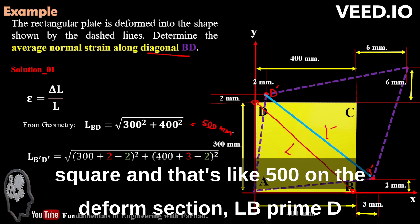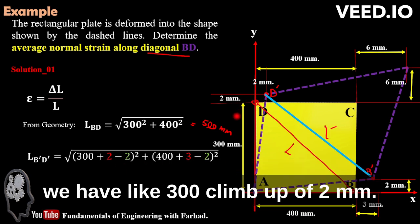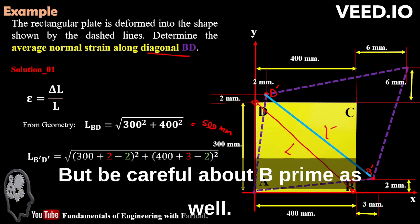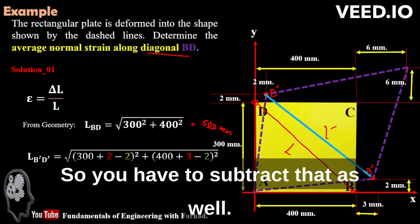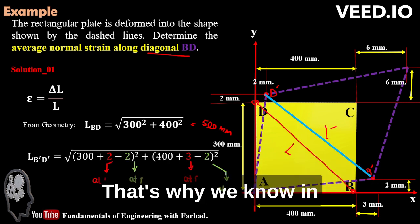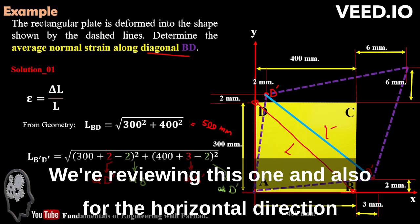On the deformed section, L B prime D prime is square root of, in the vertical direction, we have 300 millimeters and a climb up of 2 millimeters. But be careful about B prime as well. B prime is also climbing 2 millimeters, so you have to subtract that as well. That's why we know in strain, relative deformations are important.